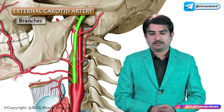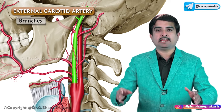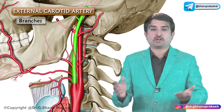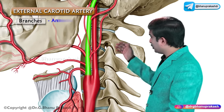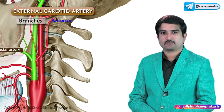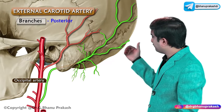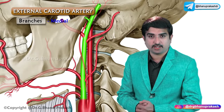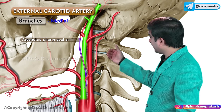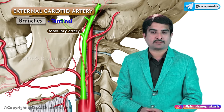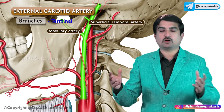The external carotid artery gives off totally eight branches, which may be grouped as anterior, posterior, medial, and terminal. From anterior: superior thyroid, lingual, and facial arteries. From posterior: occipital and posterior auricular arteries. From the medial aspect, the only branch is the ascending pharyngeal artery. The terminal branches are the maxillary and superficial temporal arteries.